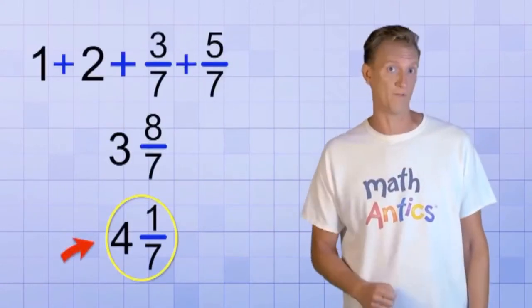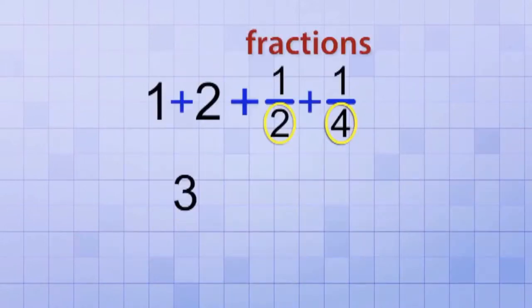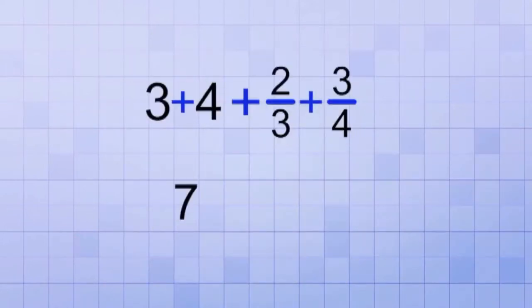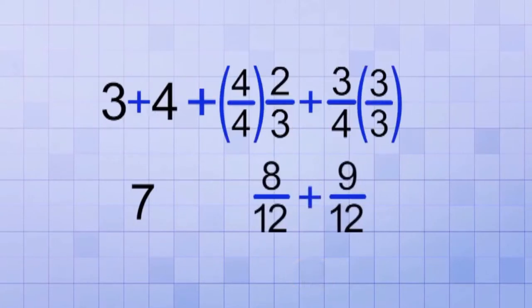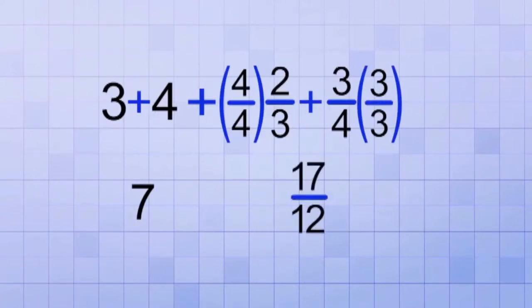But it's actually more than four, until we change the numbers so that the bottom numbers are the same. Two thirds and three fourths — since these are unlike fractions, we need to change them. Three and four are going to be added easily: eight over twelve plus nine over twelve equals seventeen over twelve.